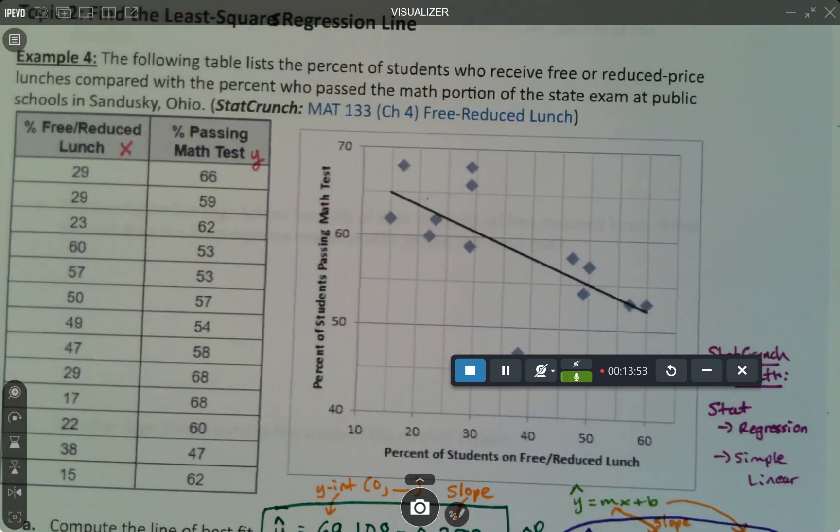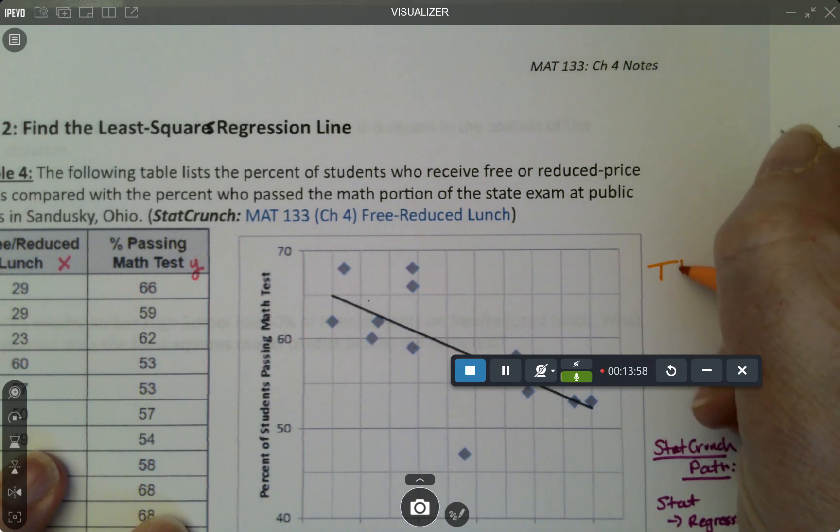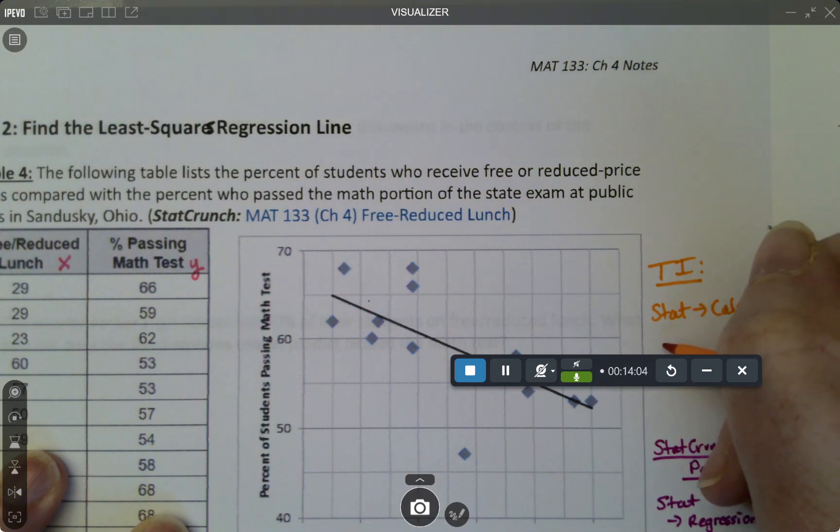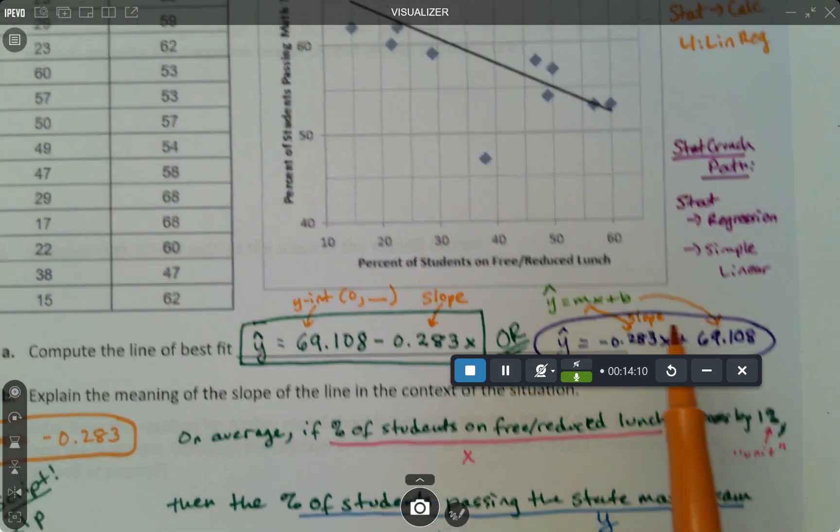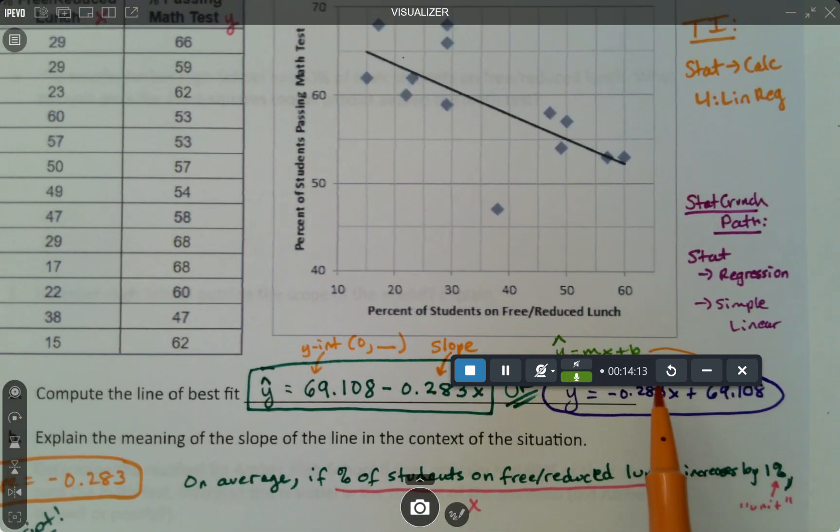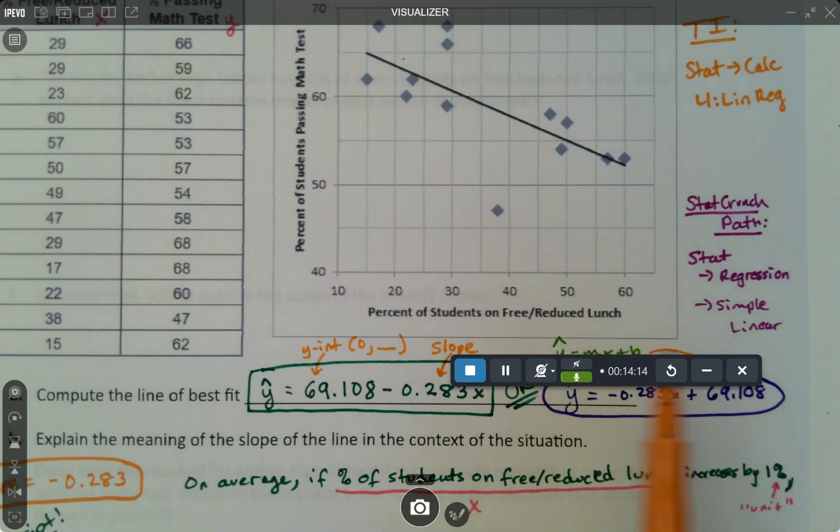So if you want to write instructions for yourself for the TI, I'll just kind of put them up here. So for the TI calculator, you would use stat, then calc, then number four linreg. Number four linreg gives you this version, the kind of more standard algebra version. Number eight actually gives you this version, so it works either way, it's just kind of up to you.